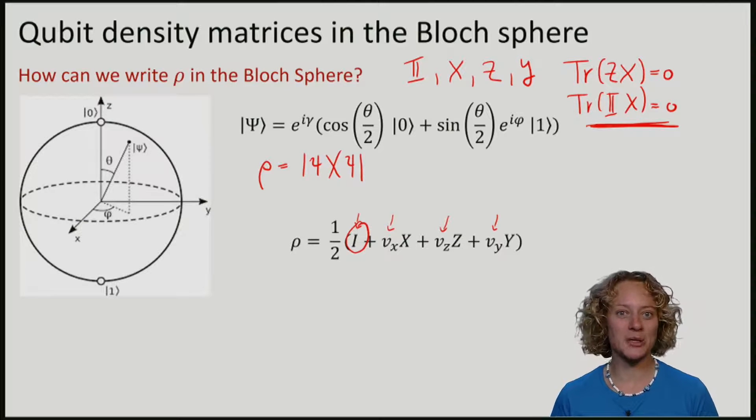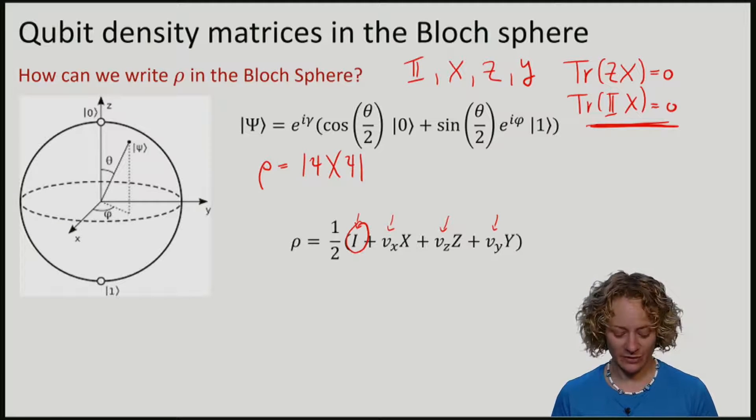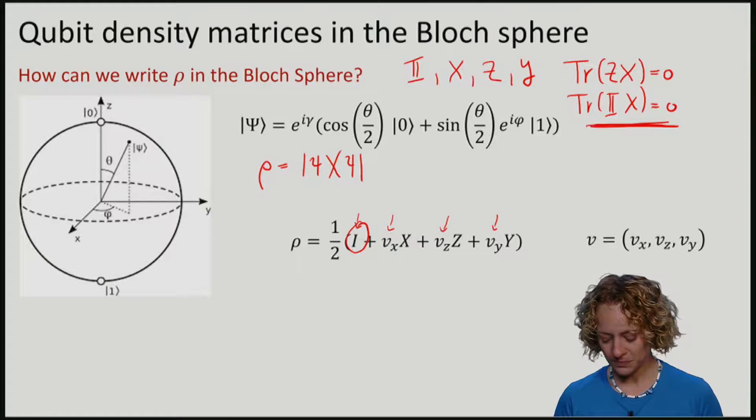This means that we can characterize a 1-qubit density matrix fully in terms of this vector, vx, vz, vy.